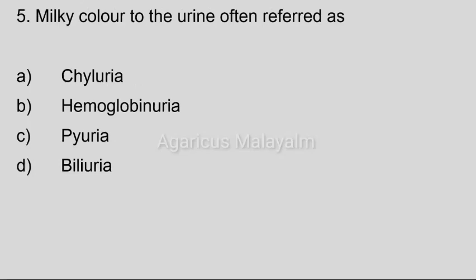Fifth question: Milky color to the urine, often referred as? Answer options — Option A: Chyluria. Option B: Hemoglobinuria. Option C: Pyuria. Option D: Bilirubinuria. Correct answer: Option A, Chyluria.